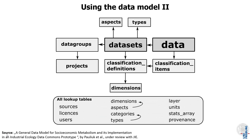The whole database looks like this. At the core is the data table, which links to a dataset — so each number is part of a dataset comprising all data of the same kind — and also links to classification items like steel, China, world, CO2, which are specified and defined, allowing different datasets to be linked via common classification items. Datasets can be part of data groups; for example, stocks and flows of a system definition are grouped into one project. The whole database has 17 tables, most of which are lookup tables, and the core structure is shown in this figure.